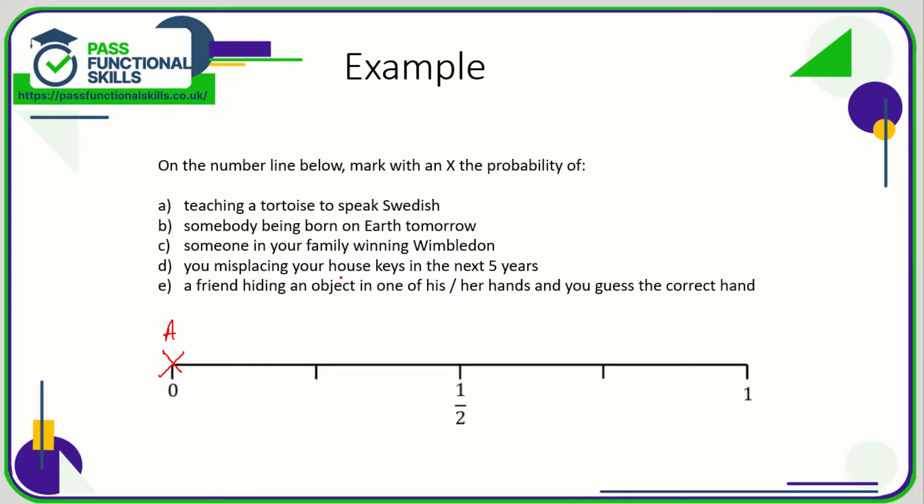Someone being born on Earth tomorrow. Well, someone is born in the city of York every single day, so I'm sure just in York someone is going to be born tomorrow. Therefore, on Earth someone is definitely going to be born tomorrow, so that is going to be 100% certain.